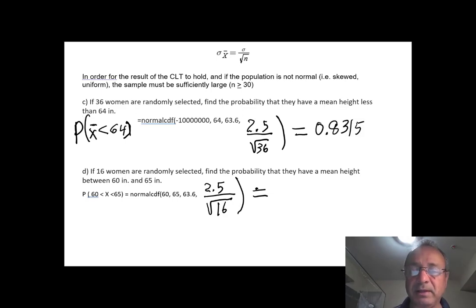So I got 0.8315. So guys, when you are working with samples, and you are asked to find the probability of the sample mean, your standard deviation cannot be the original standard deviation. You need to use the standard deviation of the sample mean, or it's called the standard error of the mean, which is the original standard deviation divided by square root of n.